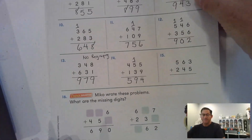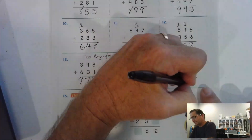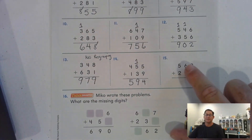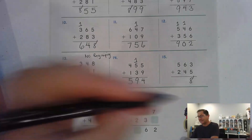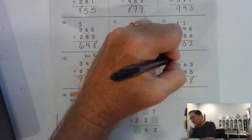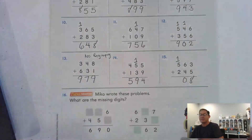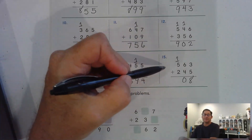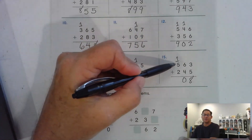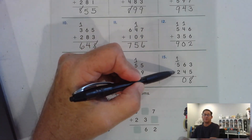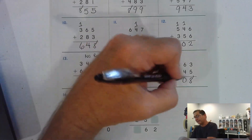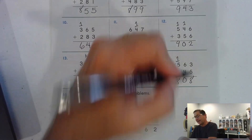Number fifteen: five and three ones is eight ones — we don't have to regroup. Six tens plus four tens is ten tens — regroup that as one hundred and zero tens. Add the hundreds: five hundred plus two hundred is seven hundred, plus one more is eight hundred.